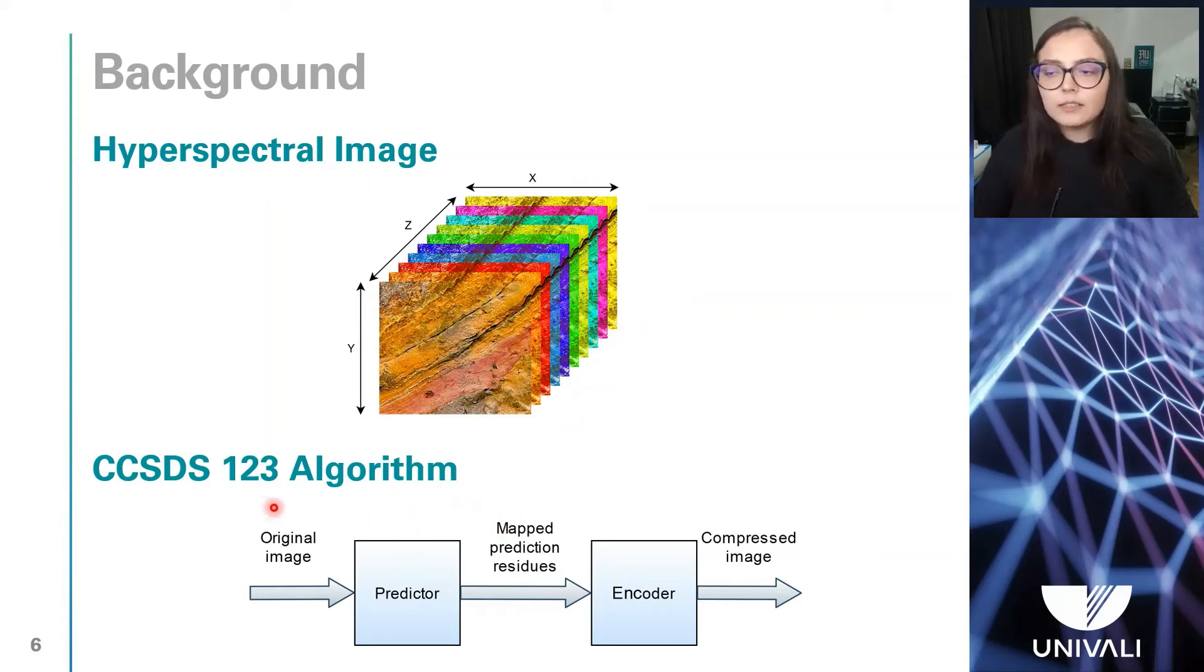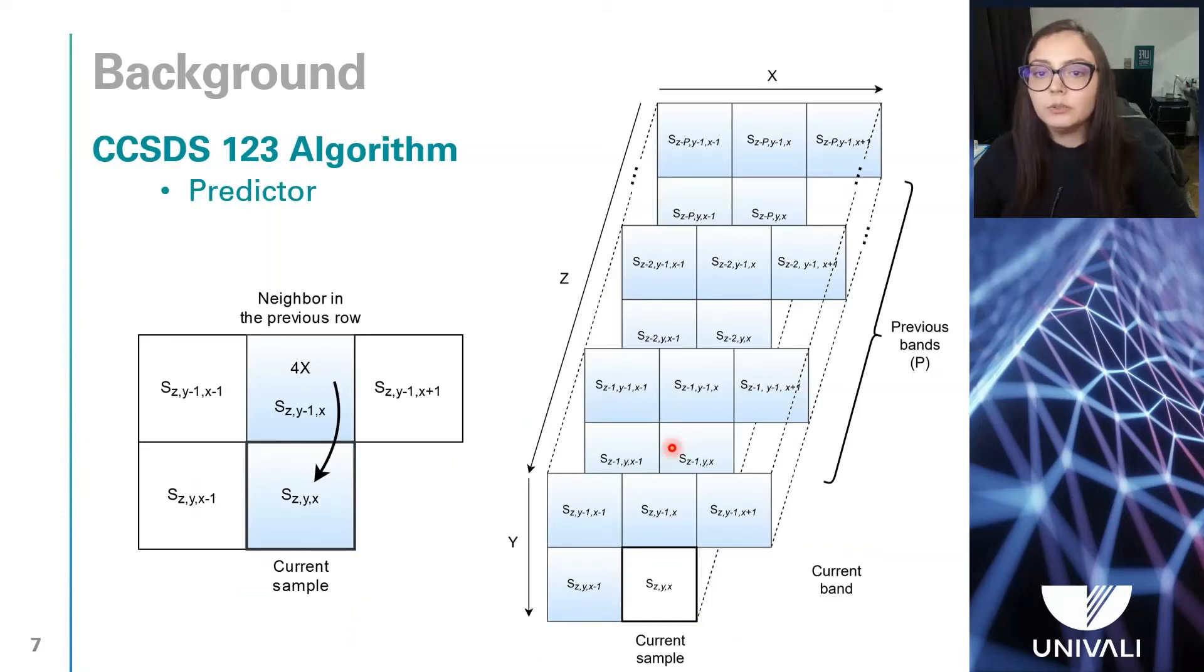We used a CCSDS algorithm implementation, and it comprises two primary blocks, the predictor and the encoder. The predictor block uses an adaptive linear prediction method to predict each image sample value based on the values of nearby samples in a small three-dimensional neighborhood.